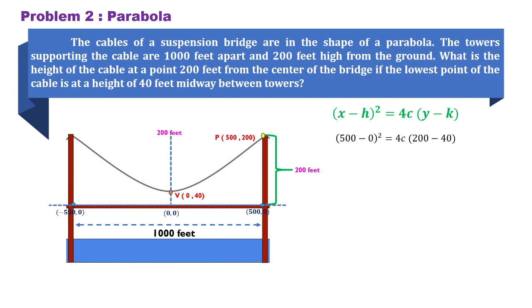By substitution, we can have this. Simplifying, that would be 500 squared, and 200 minus 40, that would be 160. 500 squared is 250,000. We can divide both sides by 160, and this will be cancelled, giving us 4c is equal to 1,562.50.